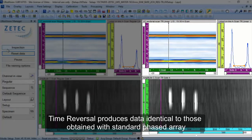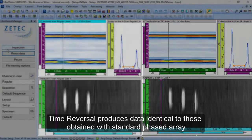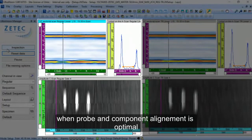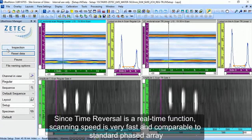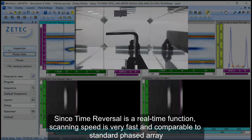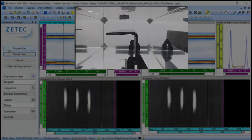Time reversal produces data identical to those obtained with standard phased array when probe and component alignment is optimal. Since time reversal is a real-time function, the scanning speed is very fast and comparable to standard phased array.